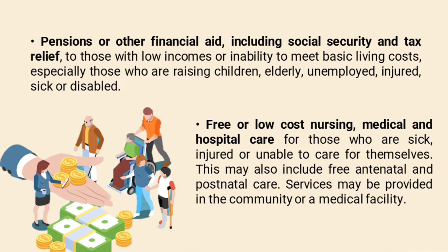Next is pensions or other financial aid, including social security and tax relief. These are given to those with low incomes or an inability to meet basic living costs, especially those raising children, the elderly, unemployed, injured, sick, or disabled. Social pensions are an effective way of reducing income poverty among older people. Financial aid can contribute to poverty reduction by providing direct benefits to the poor and by supporting increased social sector spending. Social security schemes are social insurance schemes operated by general government, for the whole population or specific segments.